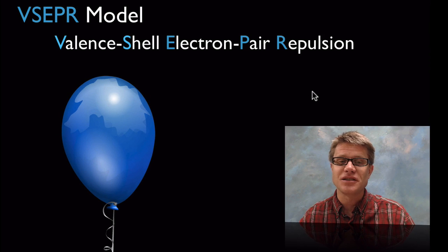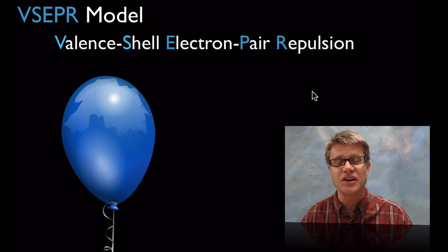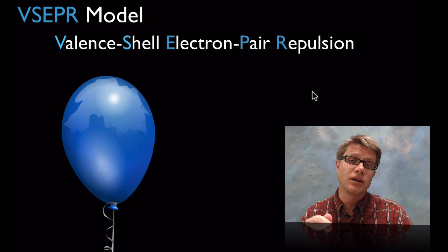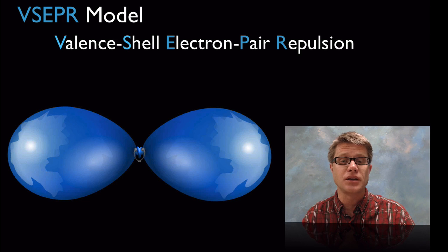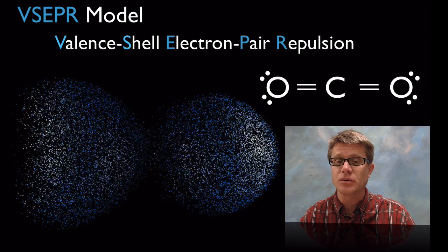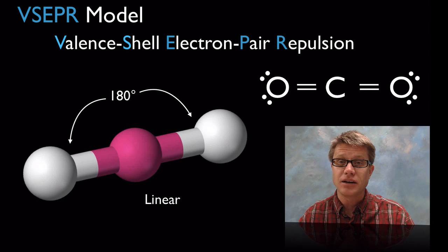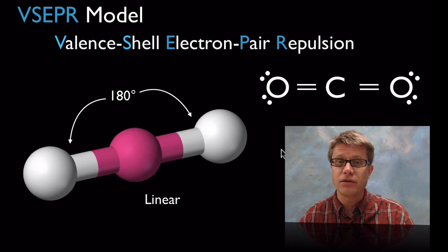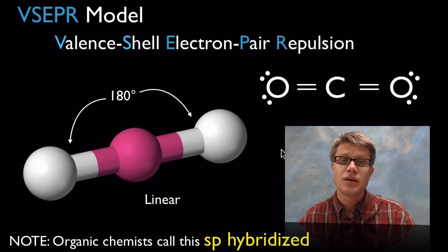Now let's get to the VSEPR model — Valence Shell Electron Pair Repulsion. When you have a pair of electrons with negative charge, they push on other pairs of electrons. Think of it like a balloon: one balloon looks like this, but two balloons held in the middle will move apart from each other. So for carbon dioxide, we have these pairs of electrons — your hand is holding it in the middle. What three-dimensional shape will it have? It's going to be linear — in a line — with a bond angle of 180 degrees. In organic chemistry this is called SP hybridized.